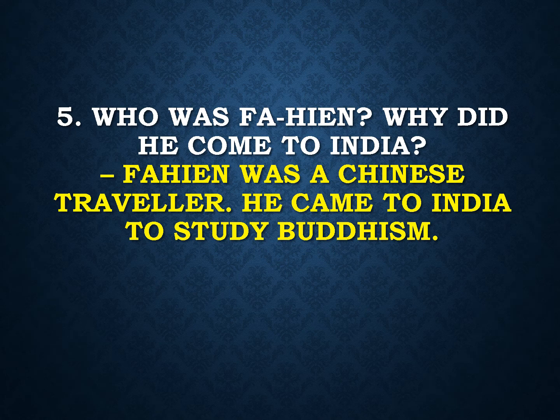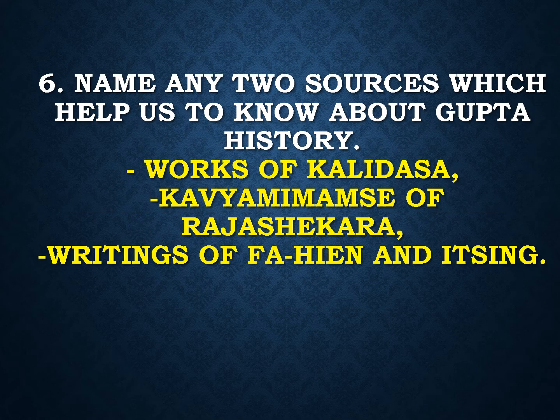Who was Faheen? Why did he come to India? Answer: Faheen was a Chinese traveler. He came to India to study Buddhism. Name any two sources which help us to know about Gupta history. Answer: Works of Kalidasa, Kavya Mimamsa of Rajashekara, writings of Faheen and Itsing.